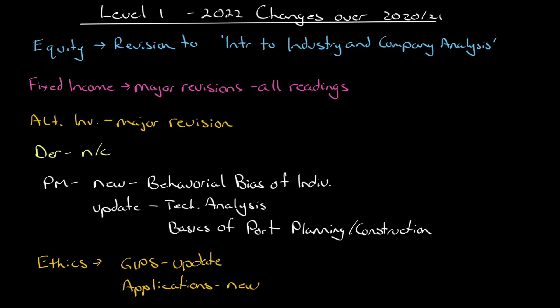Getting into the asset classes: in Equity, not many changes — there was a revision to the reading on introduction to industry and company analysis. For Fixed Income, major revisions across all readings, and this happened at Level 2 as well. Alternative Investments also had a major revision; there's only one reading at Level 1 for alternative investments and it has had a major revision.